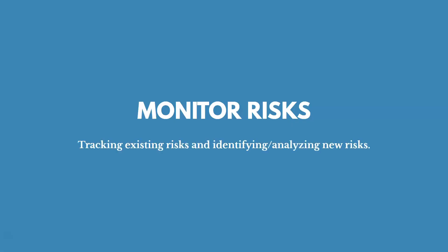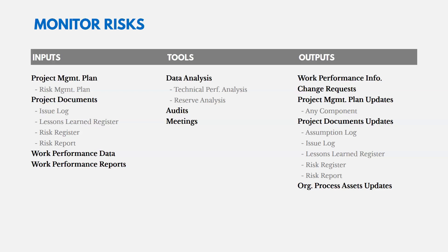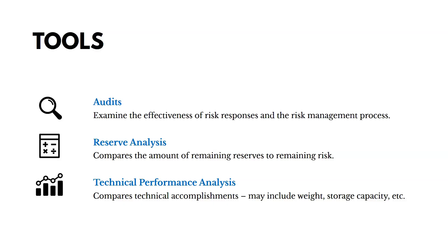Finally, let's talk about monitoring risks — tracking existing risks and identifying and analyzing new ones. Like all monitoring and controlling processes, inputs include the project management plan and work performance data (plan versus actual), with work performance information and change requests as outputs. Tools include technical performance analysis, reserve analysis, and audits. Audits examine the effectiveness of risk responses and the overall risk management process — looking at not only individual risks but how we're doing overall.